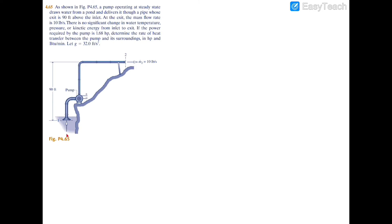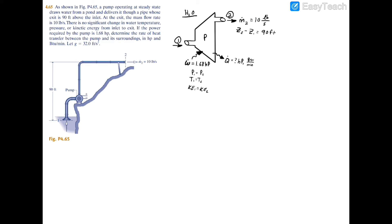In this example, we have water being sucked in by a pump, and that pump transfers the water above a hill at an elevation difference of 90 feet. The mass flow rate of the water is 10 pounds per second, and we have no kinetic energy, no change in temperature, no change in pressure on either side of the pump. The power required by the pump is 1.68 horsepower. We need to find the rate of heat transfer between the pump and the surroundings, in both horsepower and BTU per minute.